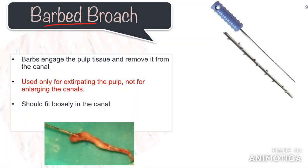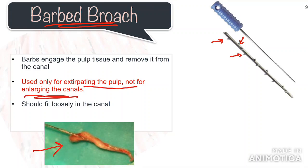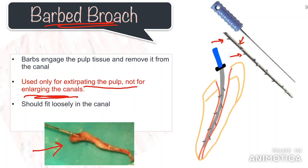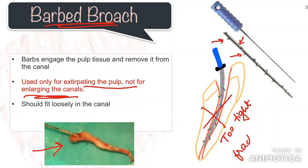The next instrument used for pulp extirpation is the barbed broach. It is made from a round steel wire, and the smooth surface of the wire is notched to form barbs bent at an angle from its long axis, as you can see in the image. These elevated barbs engage the pulp tissue and remove it from the canal. A broach is used only for extirpating the pulp, not for enlarging the canals. If you force the broach too far apically into the canal, the barbs will get compressed by the canal wall, and as you pull it out, the barbs may get caught in the dentinal wall, making it very difficult or impossible to remove — or it could even break, as it is an extremely fragile instrument.